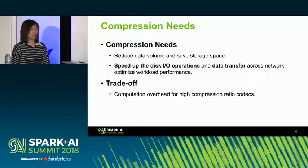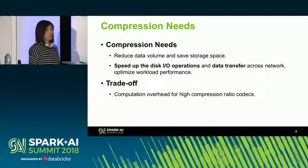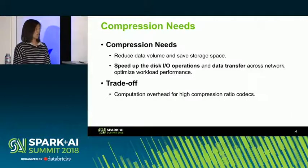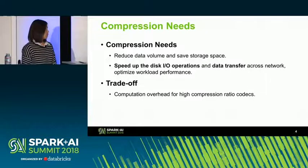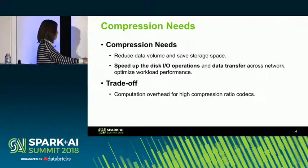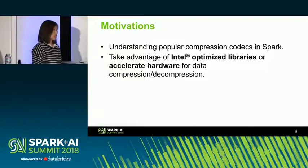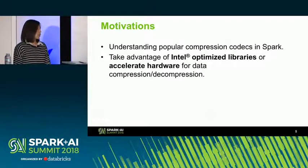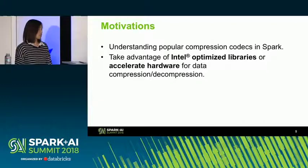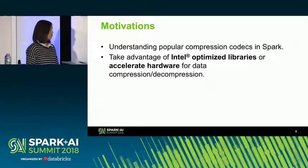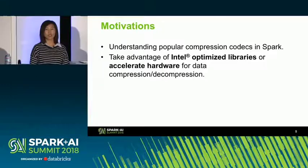Compression and decompression will consume CPU resources. So for high compression ratio codecs, there may exist a computation overhead. Our motivations: there are many kinds of compression codecs supported in Hadoop, Spark, and other big data ecosystems. We want to understand the popular compression codecs in Spark and take advantage of Intel optimized libraries or accelerator hardware for data compression and decompression to offload CPU resources.